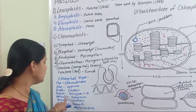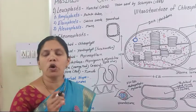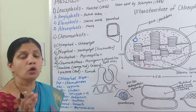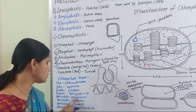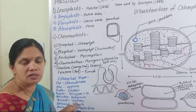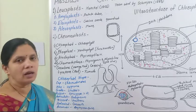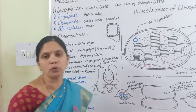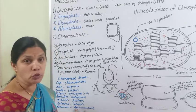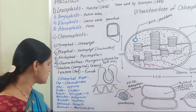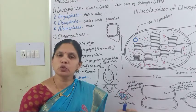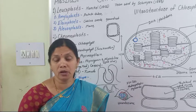In Oedogonium, the chloroplast is reticulate or net-like. In Ulothrix, the chloroplast is discoid-shaped. In Chlorella, the chloroplast is spherical in shape. And in higher plants or angiospermic plants, the chloroplast is oval or biconvex in shape. So the chloroplast shape shows variation in different types of plants.